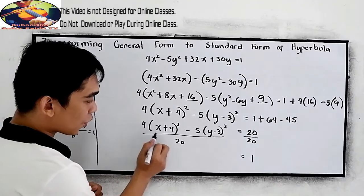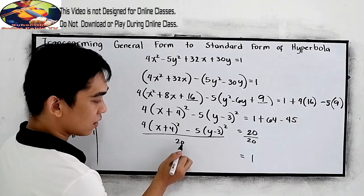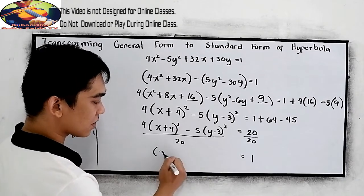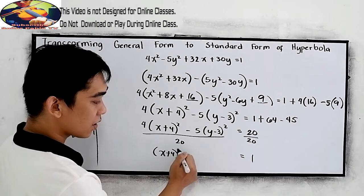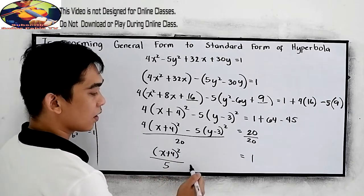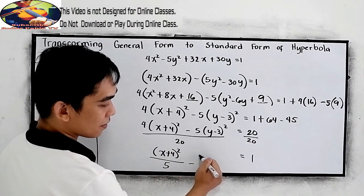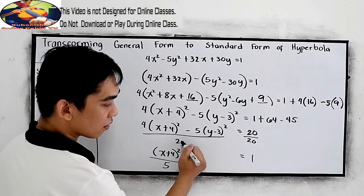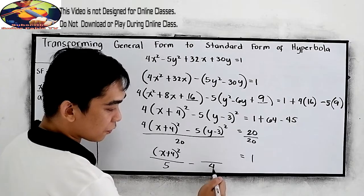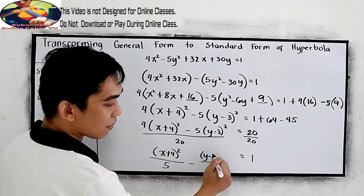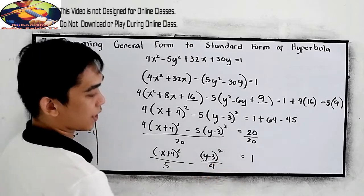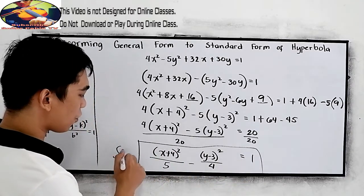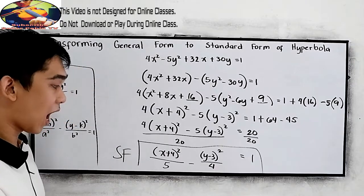So, simplify. 4 divided by 20, that is 1 over 5. So, for our answer: x plus 4 squared all over 5 minus 5 divided by 20, that is 1 fourth, so our denominator is 4. y minus 3 squared. This will be the standard form of the hyperbola.